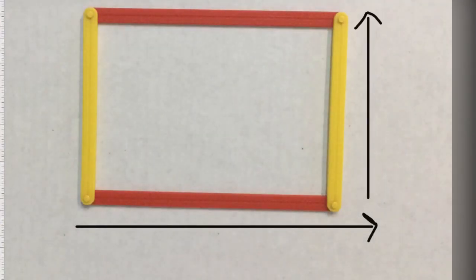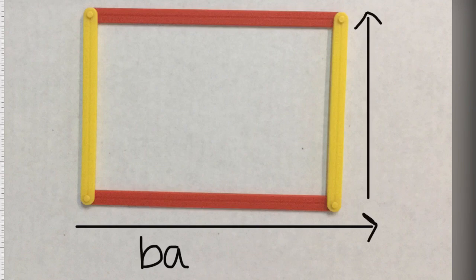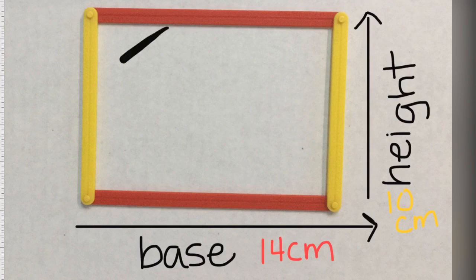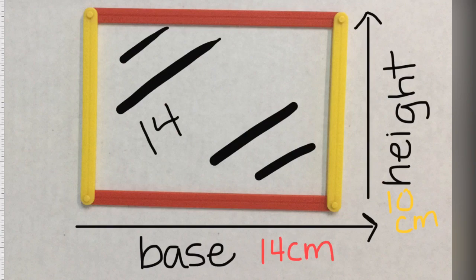Now when I add another dimension here, I create a rectangle. I have the base and I have the height. Each have their own measurement. The base is 14 centimeters, still a linear measurement, and the height is 10 centimeters, still linear. However, inside we find the area which is 140 centimeters squared because now there are two dimensions.